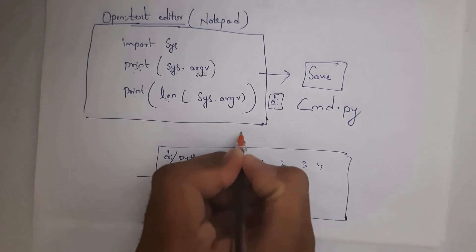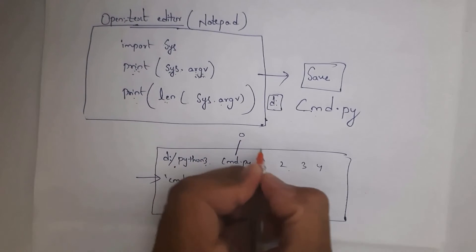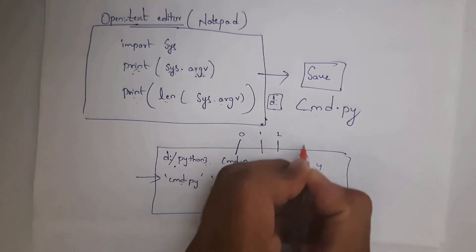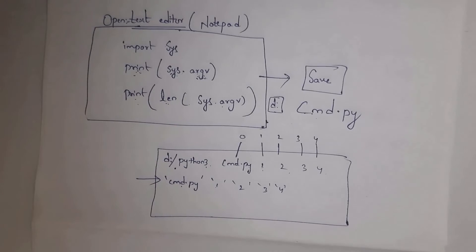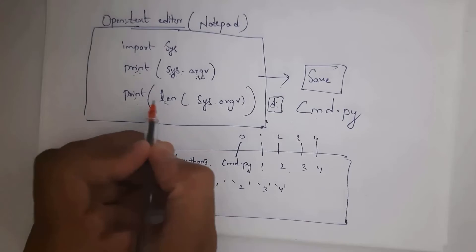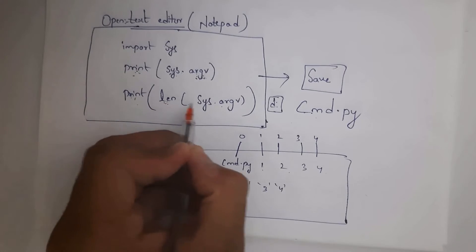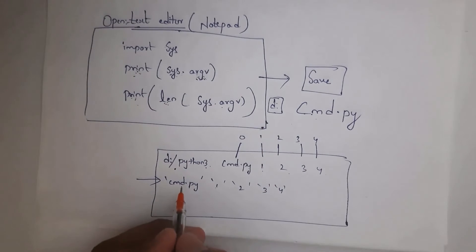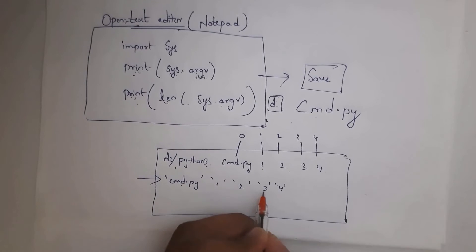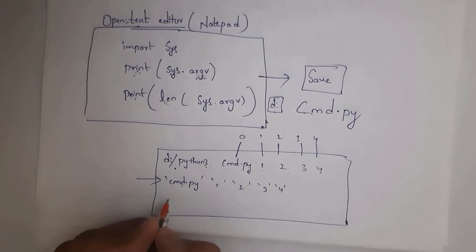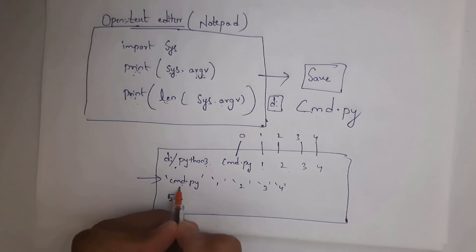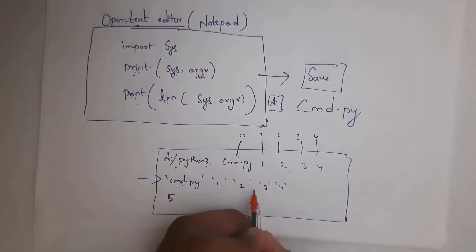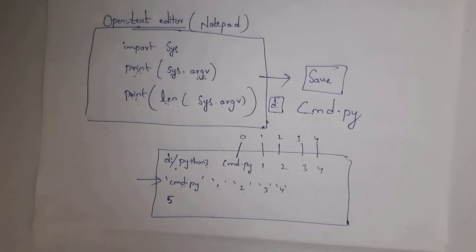cmd.py is present at index number 0. Input 1 is at index number 1, 2 is at index number 2, 3 is at index number 3, and 4 is at index number 4. And 'print len(sys.argv)' will display the length. Total there are 5 inputs — file name is also considered as 1 input — so the total is 5 input values, and you will get length 5.